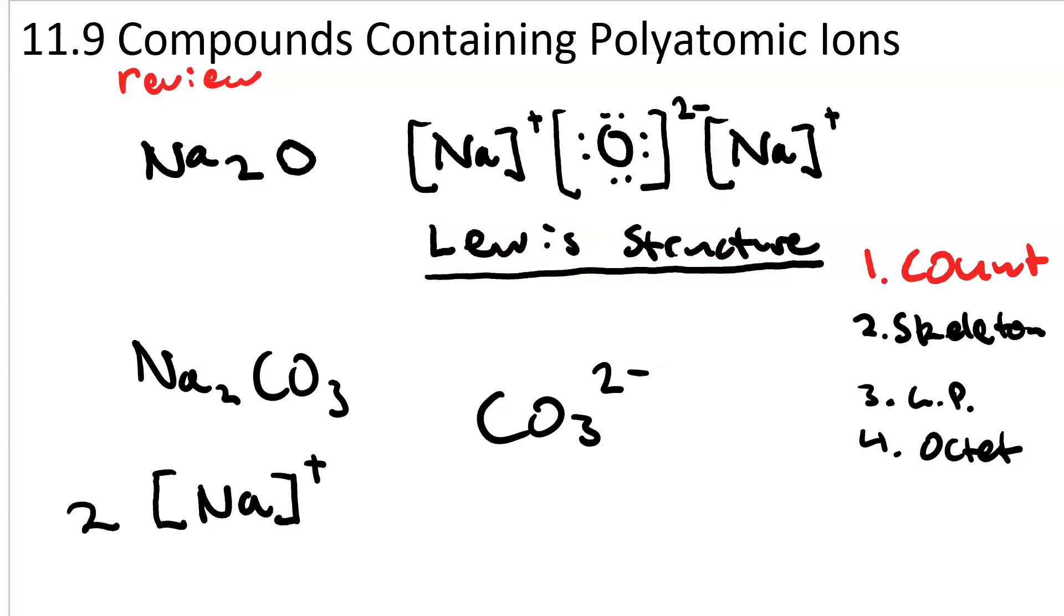First we count the electrons. Each carbon contributes four. There's one carbon total, so four from carbon. Each oxygen contributes six. Six times three is 18. And with this negative two charge, since each electron has a minus one charge, we have to add two electrons. That gives us a grand total of 24 electrons.